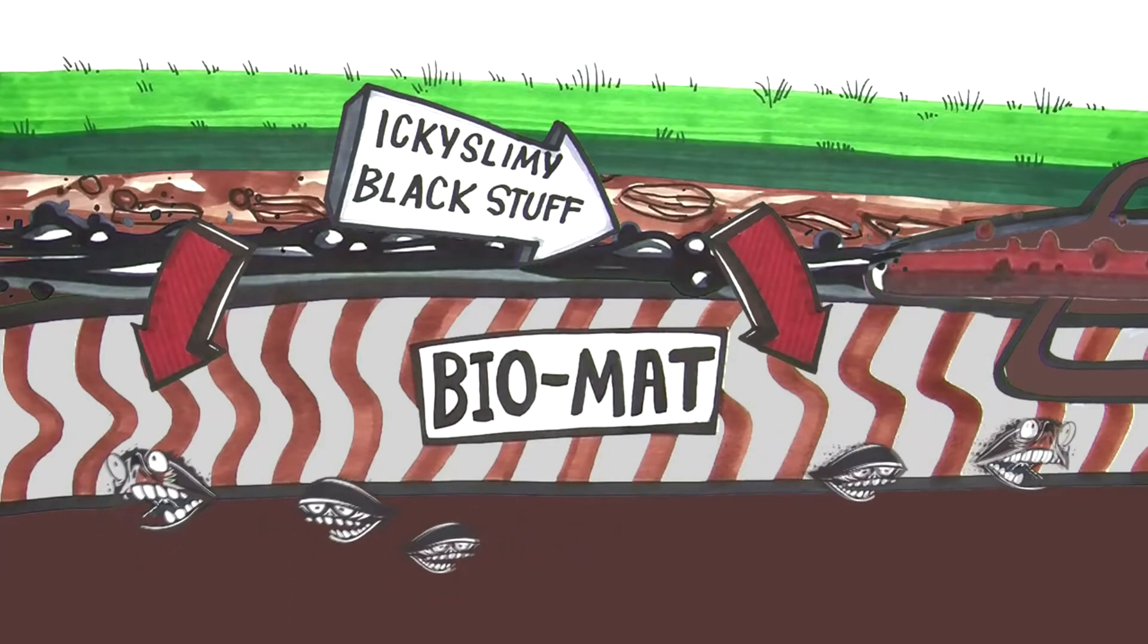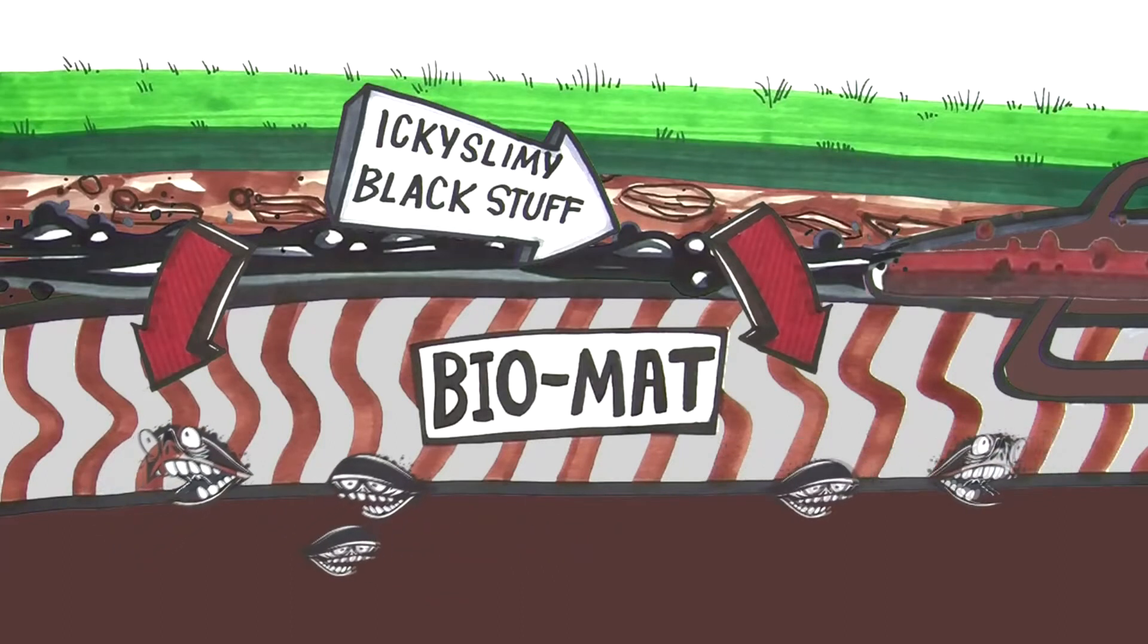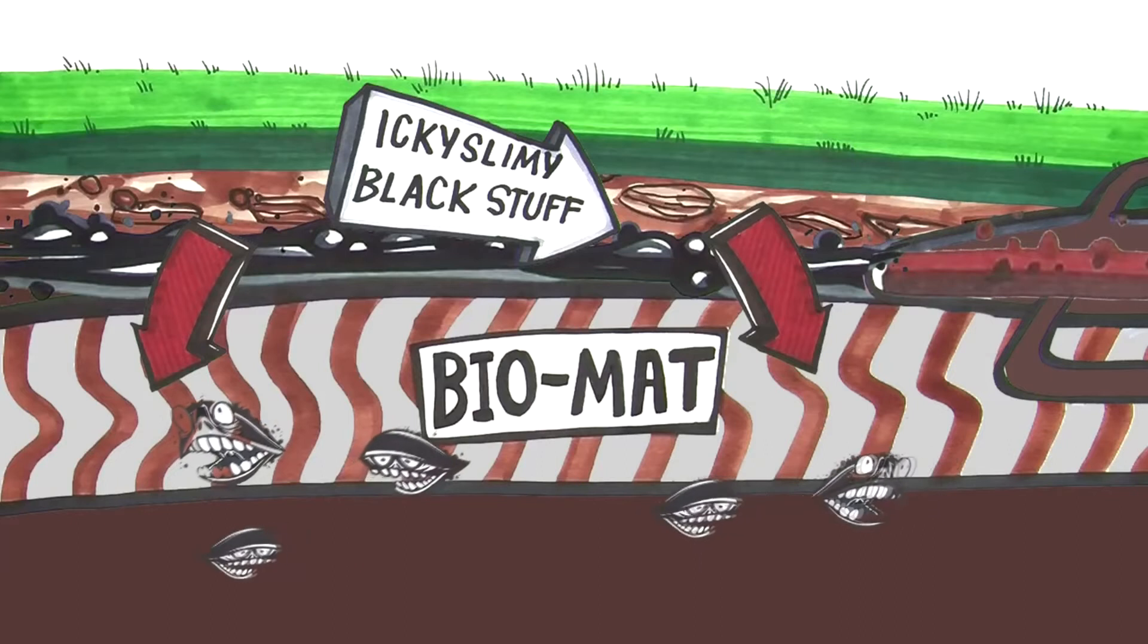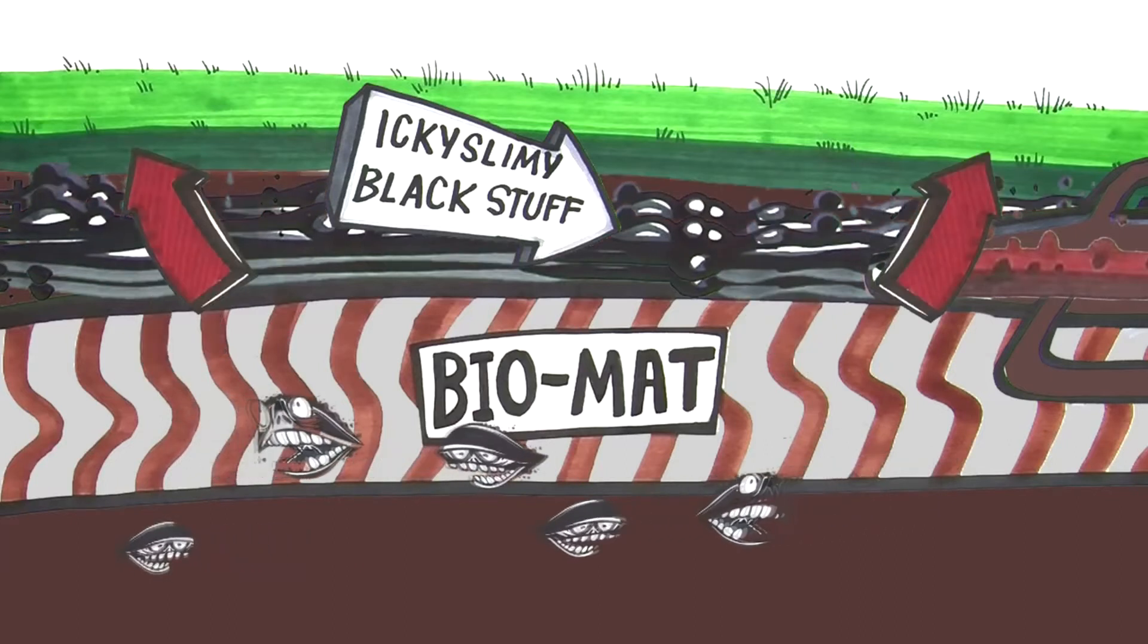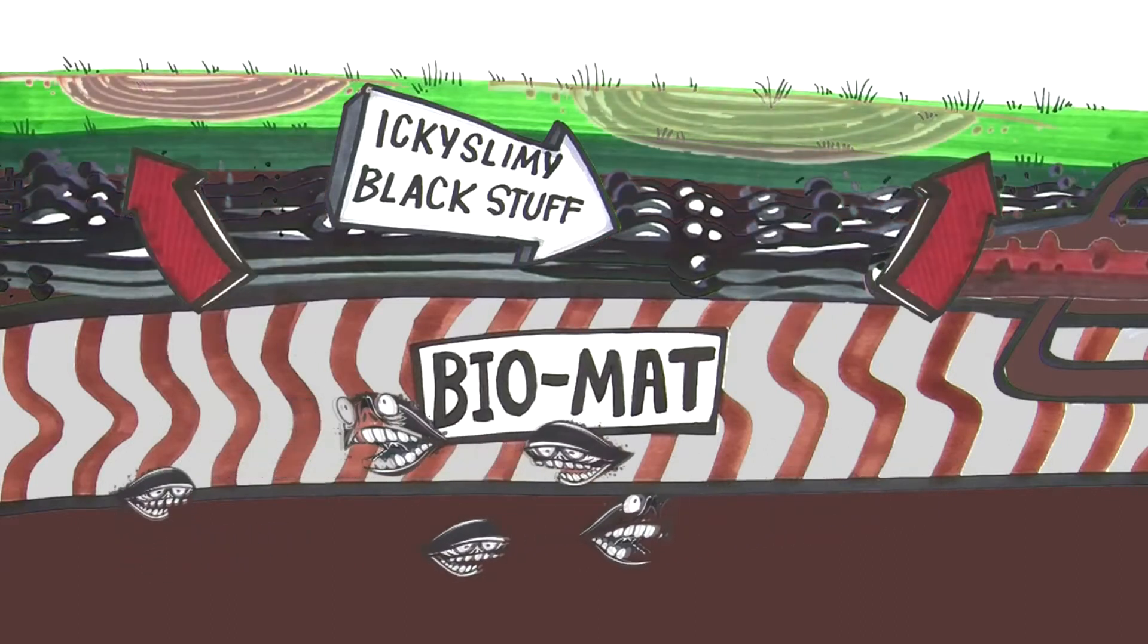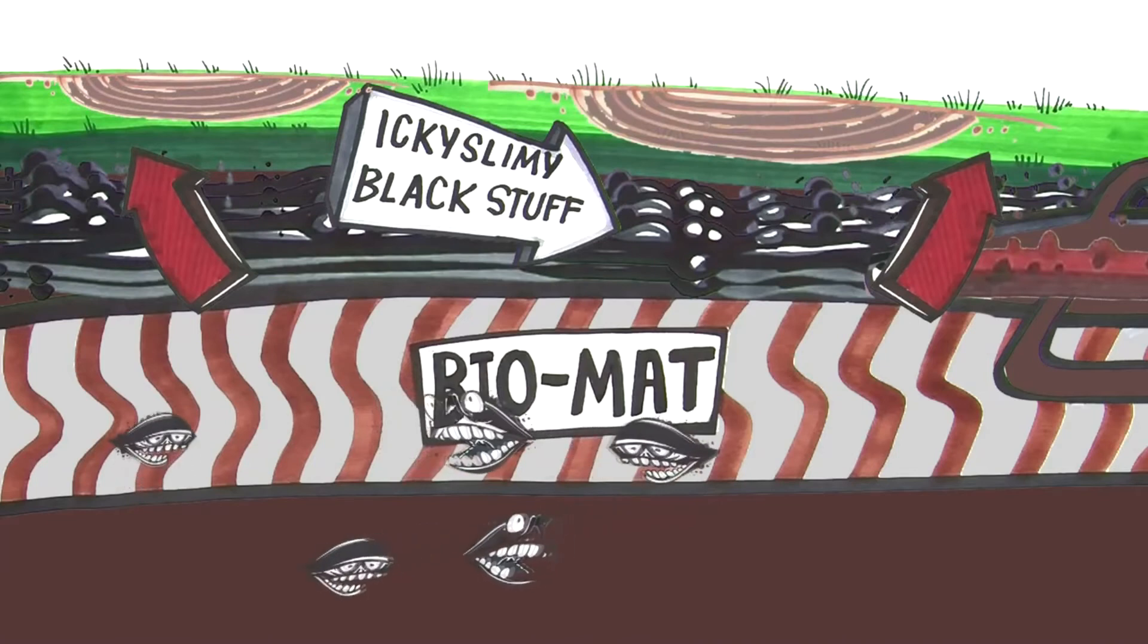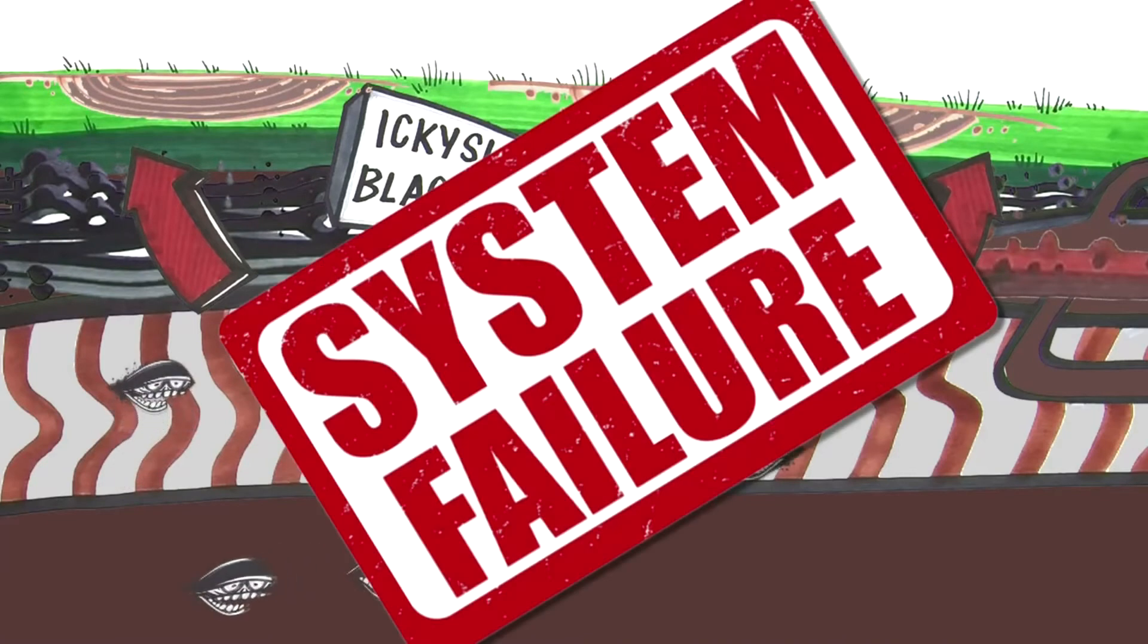Wastewater flows through the biomat as part of the cleaning process. Problem is, after a while, there's too much black, slimy stuff. The biomat grows thicker. Too thick, it clogs, and your system fails.